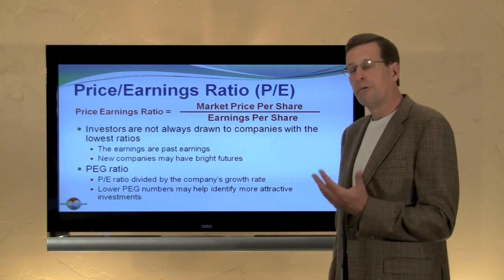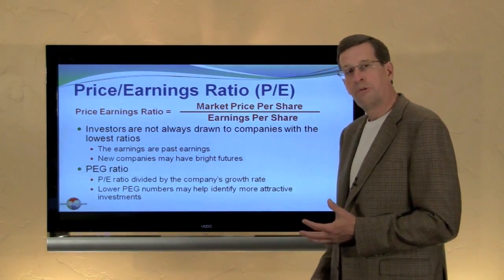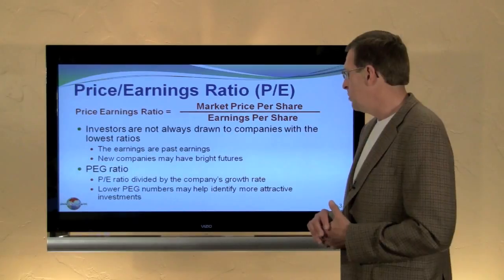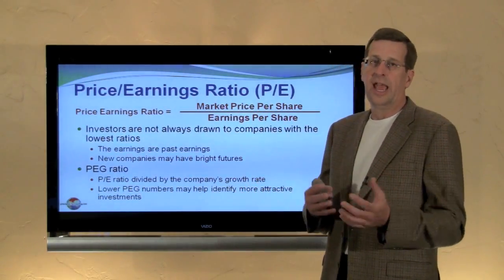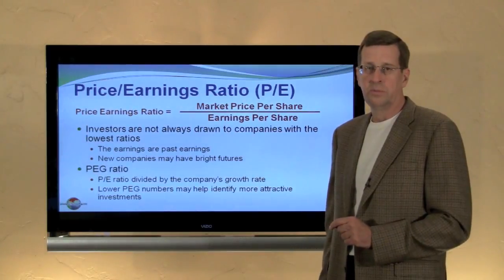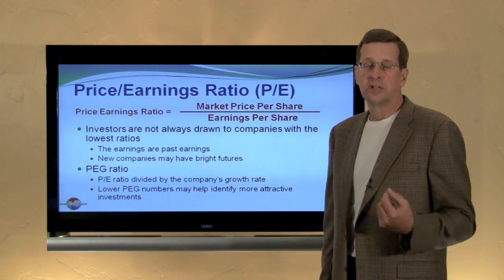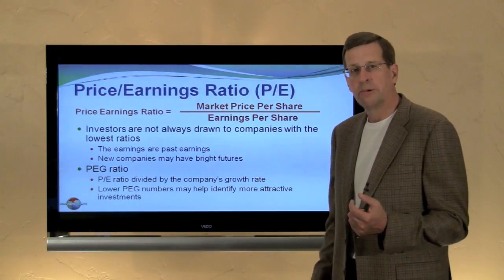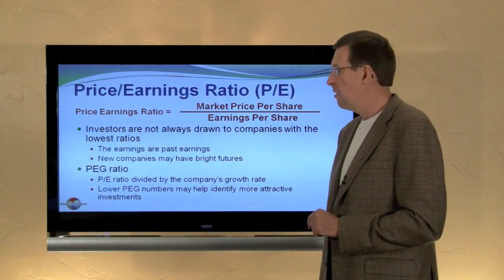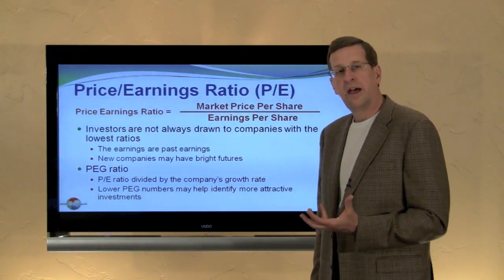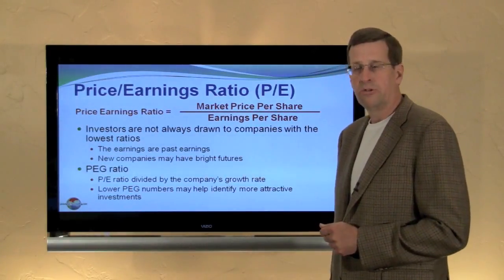Sometimes people look at a PEG ratio, which is the price-earnings ratio divided by the company's growth rate. A lower PEG ratio number may help identify more attractive investments. These are generalizations — every situation is unique. But if a company is growing at 20% per year versus one growing at 10%, all else being equal you would rather buy the investment with the higher growth rate. This calculation integrates the PE ratio with the company's growth rate.